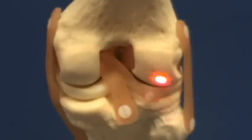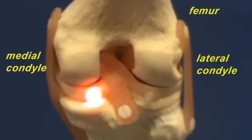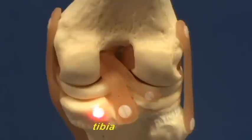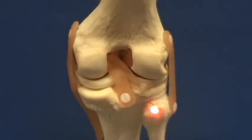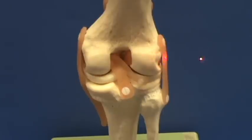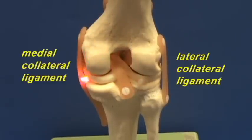The lateral condyle of the femur, the medial condyle of the femur. Here is the tibia, and right over here is the head of the fibula. And we can zoom out. Here would be the lateral collateral ligament, or the fibular collateral ligament. And here is the medial collateral ligament, also known as the tibial collateral ligament.